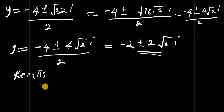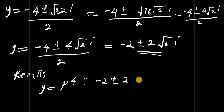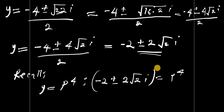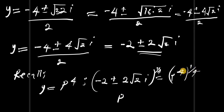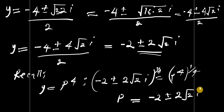Recall that y equals p to the power of 4, so negative 2 plus or minus 2 root of 2 times i equals p to the power of 4. Multiplying the exponent by one-quarter, we get p equals negative 2 plus or minus 2 root of 2 times i, all to the power of one-quarter.